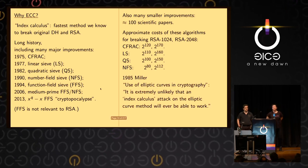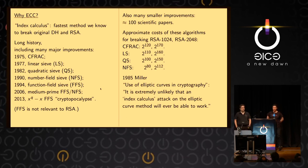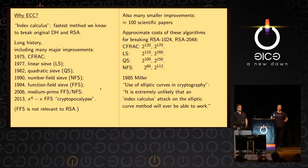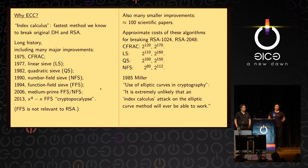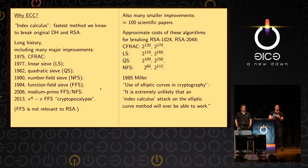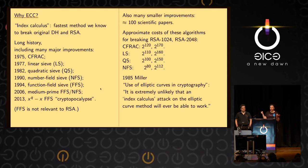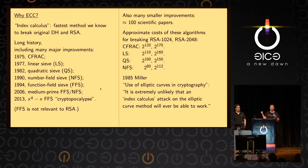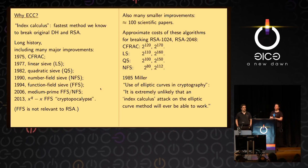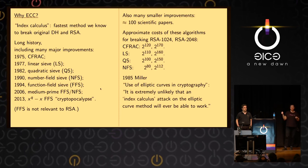In 1985, when basically the number field sieve or the quadratic sieve was in development, Miller was proposing elliptic curves as an alternative to factorization-based methods. Factorization or Diffie-Hellman would be broken by all of these algorithms. Miller said he'd looked at elliptic curves, and it is extremely unlikely that an index calculus attack on the elliptic curve method would ever be able to work. So we can completely ignore all of these improvements that made factorization and finite field-based Diffie-Hellman so much weaker.